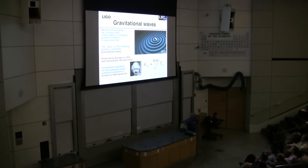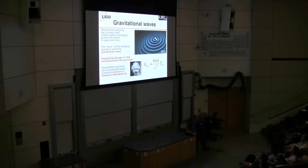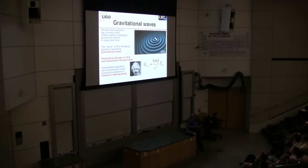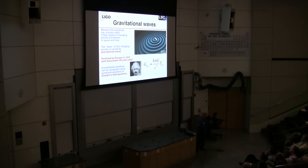I just need to remind you of some of the properties — what gravitational waves are and the properties we expect them to have. Matter and energy, according to Einstein, cause space and time to curve. That's what manifests gravity. And if matter and energy are accelerating, they will change the gravitational field dynamically, and the news of the rapidly changing gravitational field will propagate outward at the speed of light as gravitational waves.